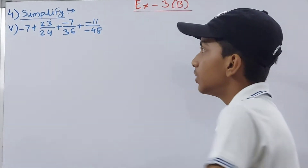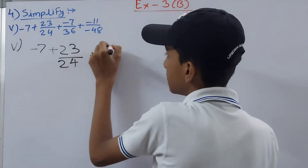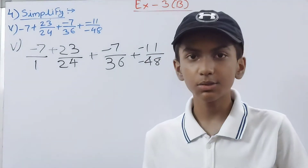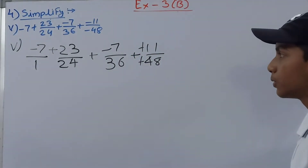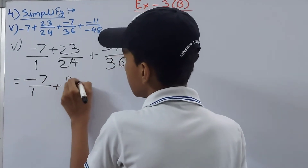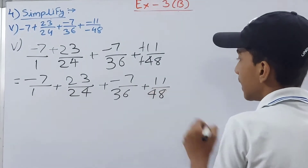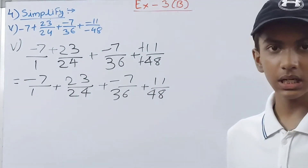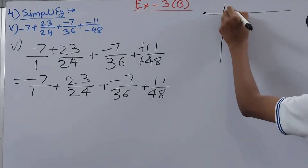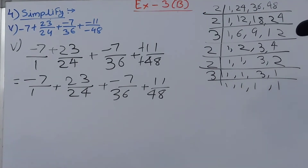In the fifth part we have -7 + 23/24 + (-7)/36 + 11. Writing -7 as -7/1 and 11 as 11/1, the negatives from the integer and the fraction term are handled to give -7/1 + 23/24 + (-7)/36 + 11/48. We now find the LCM of 1, 24, 36, and 48.